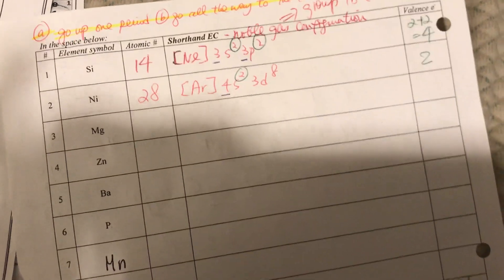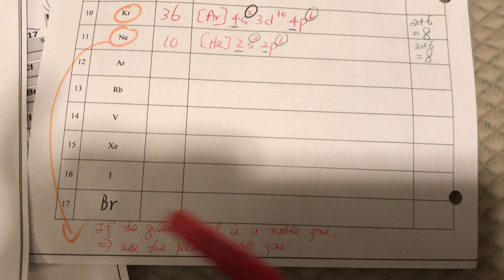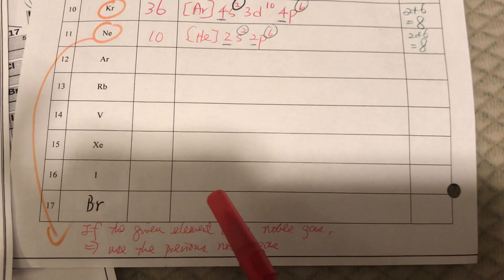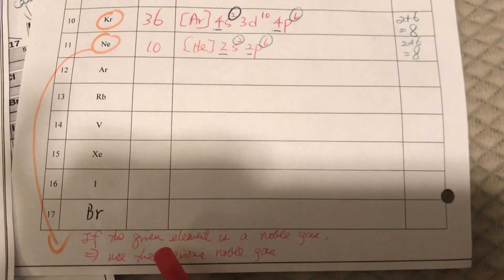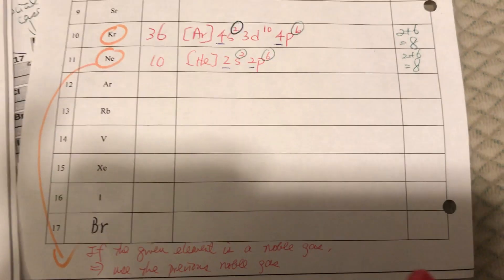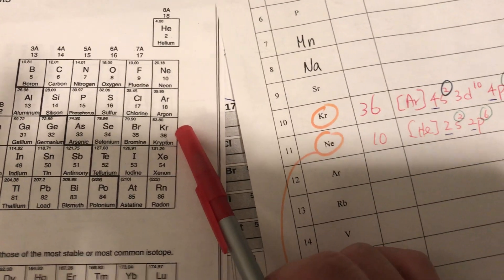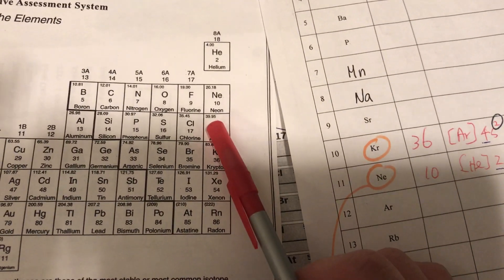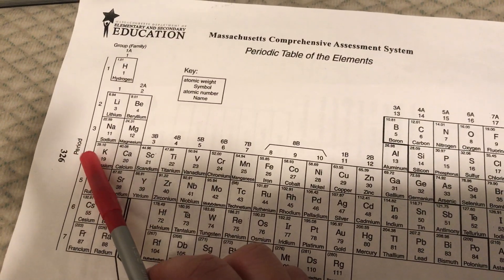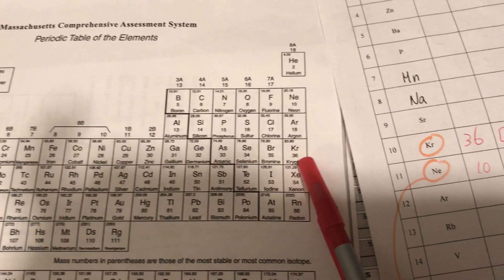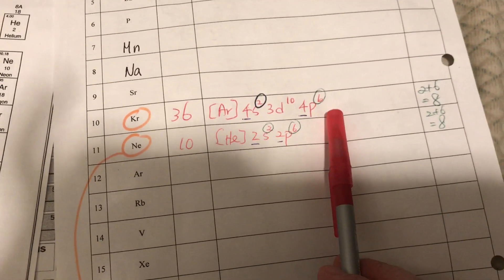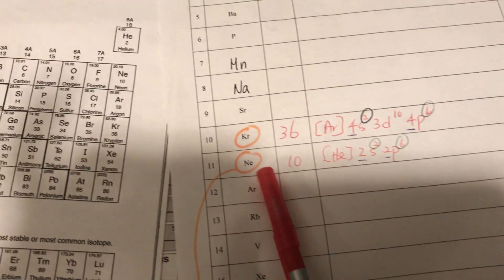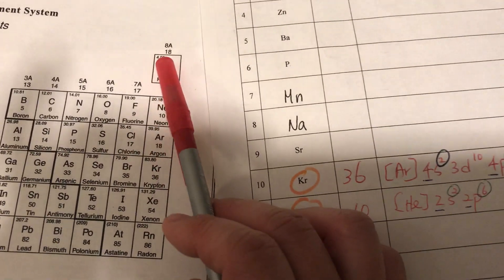What if the element you're given is already a noble gas? Use the previous noble gas. For example, krypton, Kr, is atomic number 36 and is already a noble gas, so we use the previous noble gas, argon. Write bracket argon, then four s two, three d ten, four p six. Same thing for neon — neon is already a noble gas, so we use the previous one, which is helium.